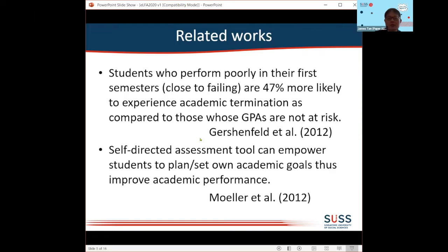Here is some of the work that people have been doing to think about how they can help students better prepare for their study. For example, Genshefield mentioned that students who do not do well in their first semester tend to face academic termination — something I observe in my own university as well. When students come in unprepared, get into trouble in the first semester, and have a very low CGPA, that is a critical point where we need to tell them exactly what to do to avoid academic termination in subsequent semesters.